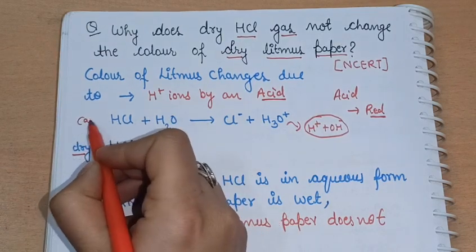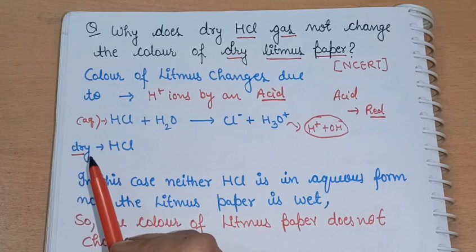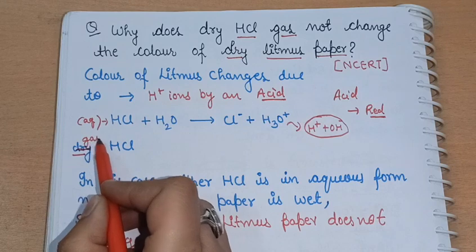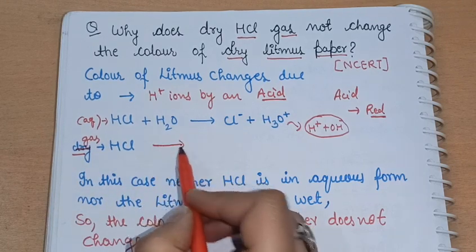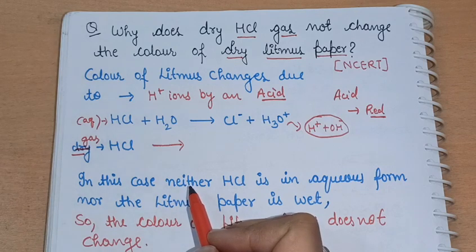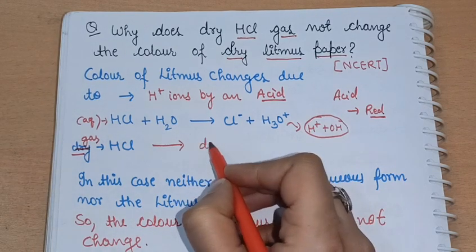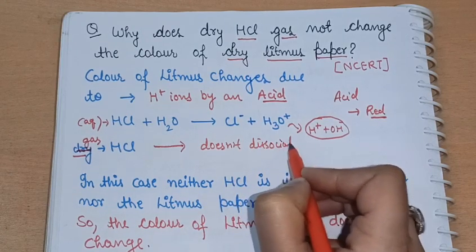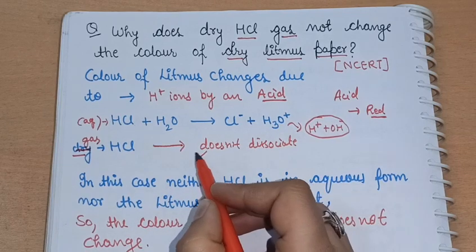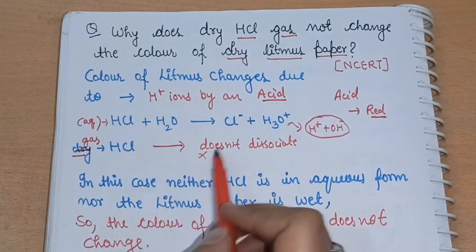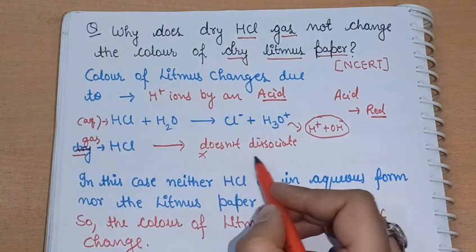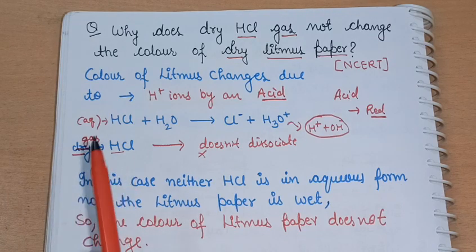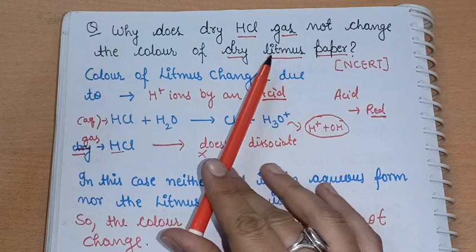But this is not the aqueous case — it is gaseous form. HCl in gaseous form does not dissociate into its ions. So there is no dissociation; H⁺ and Cl⁻ ions will not be found. We don't have free H⁺ ions because it is in gaseous form, and this is why the litmus paper shows no color change.